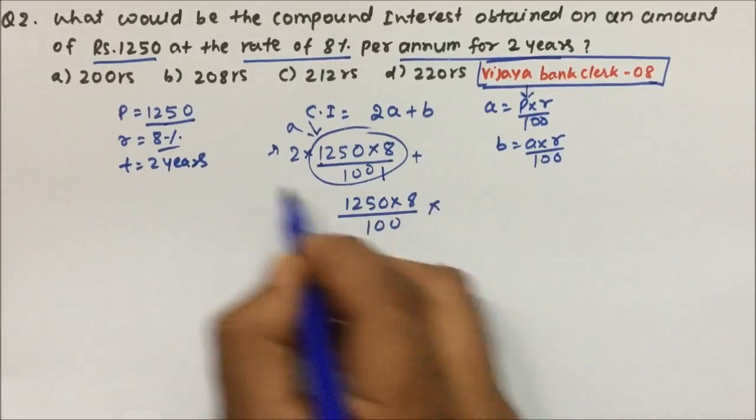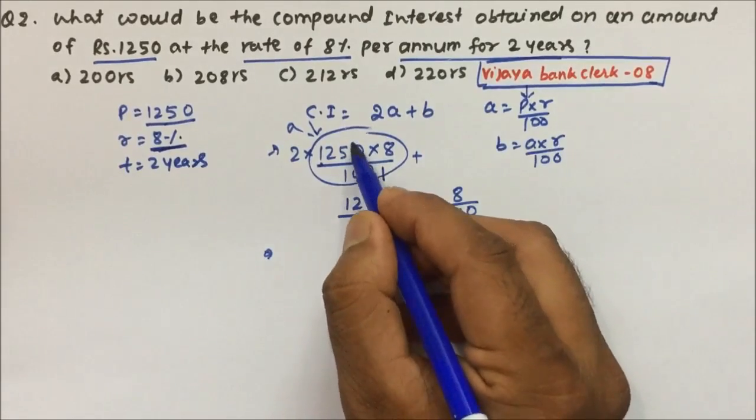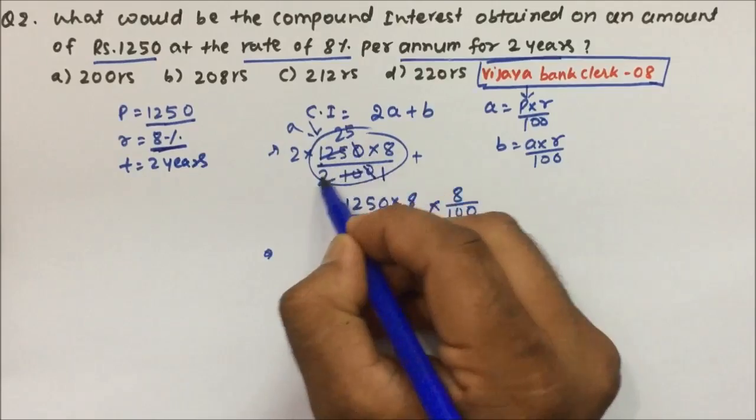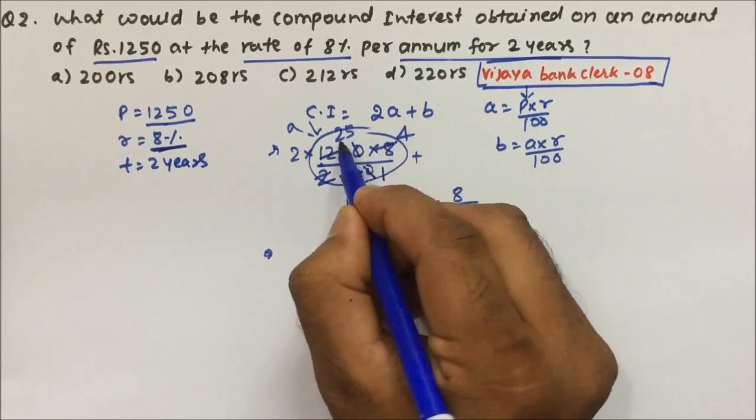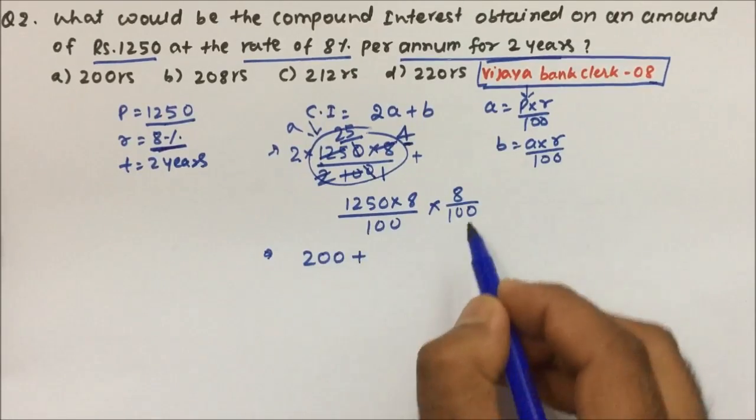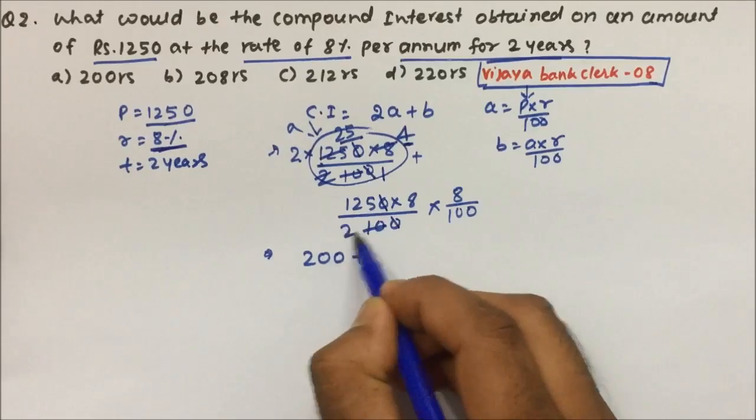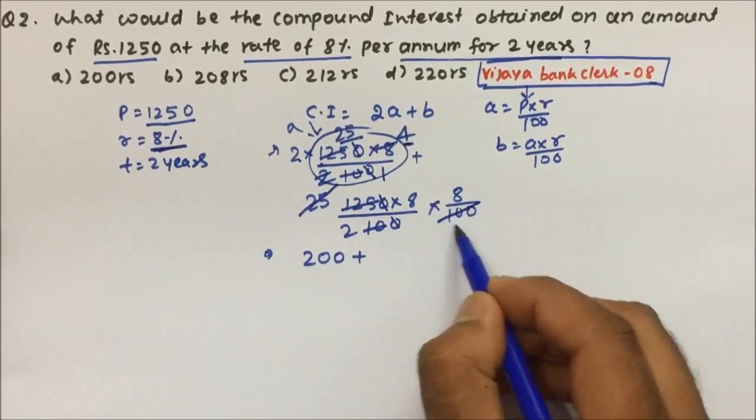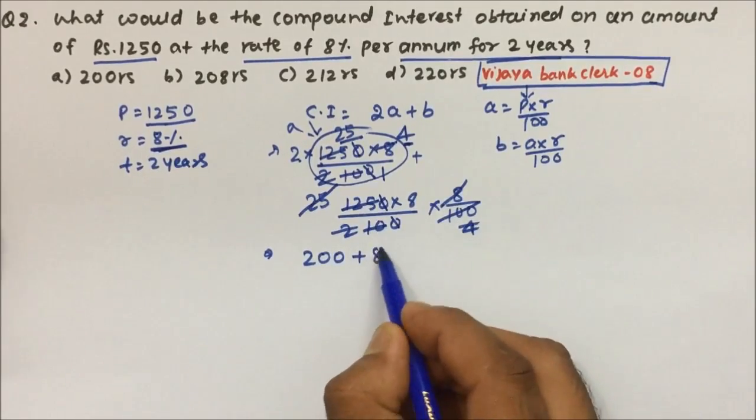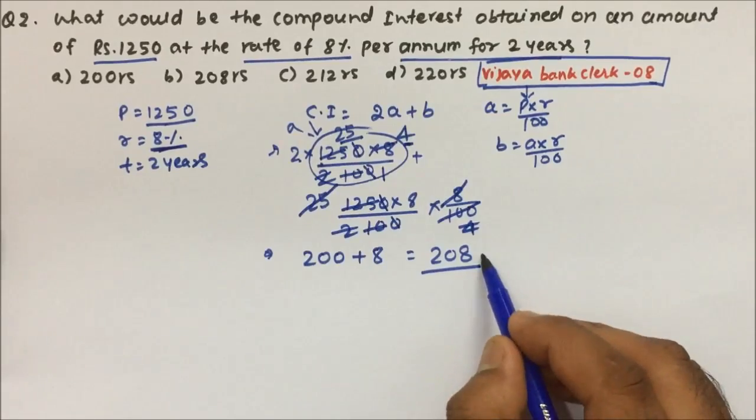Now try to simplify this. So 1 zero will cancel 1 zero. 5 into 2 and 5 into 25 and 2 into 4, so 25 into 4 is 100 and 100 into 2 is 200. That I will write down here. And see, again this zero and zero will get cancelled. 5 twos are 10, 5 twenty-five times and 25 four times, 4 into 2 is 8. Cancel, only 8 is remaining. That is nothing but 208.